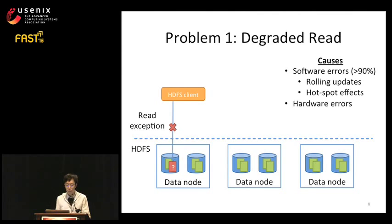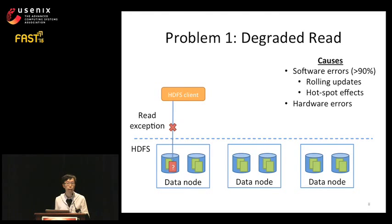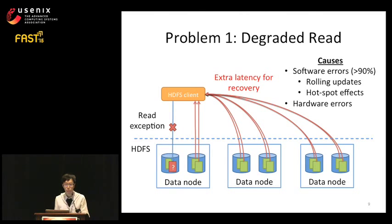First, let's take a look at degraded read. Degraded read happens when a client reads a block and gets a read exception—for example, because the data node being touched is under heavy load or the disk cannot service new read requests. Hardware failures and errors can also cause degraded reads. When you get a read exception, you need to fetch other data blocks from other data nodes across the network to recover that unavailable block, which incurs extra latency for the read request.